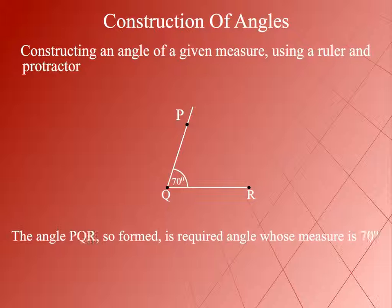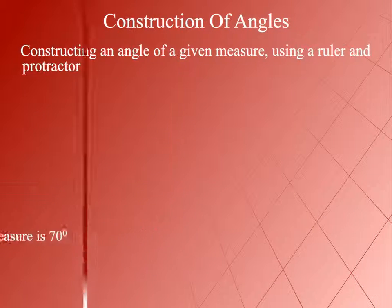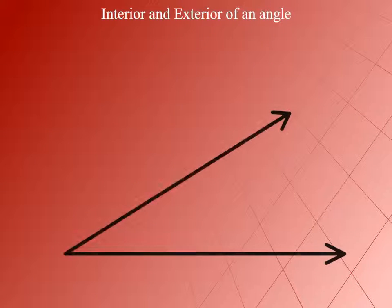We remove the protractor and draw the ray QP. The angle PQR so formed is the required angle whose measure is 70 degrees. We have constructed the interior and exterior of an angle.